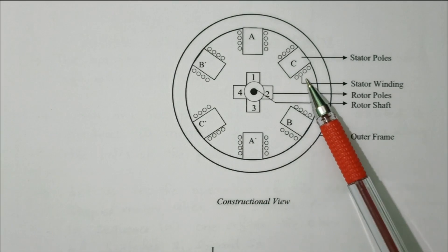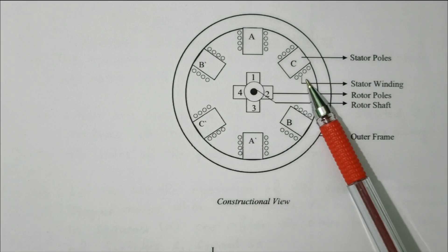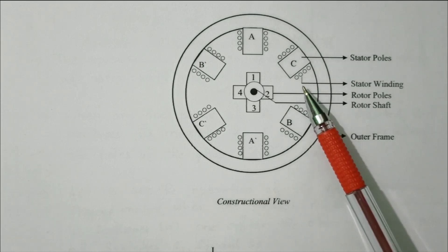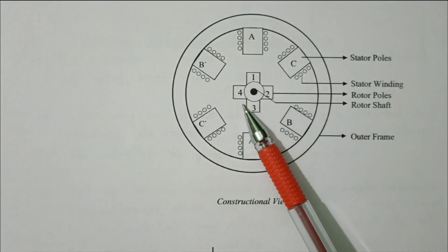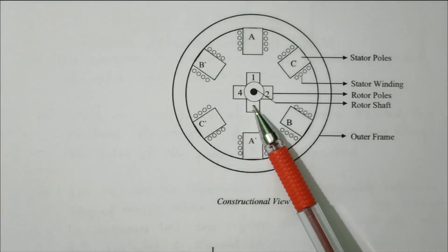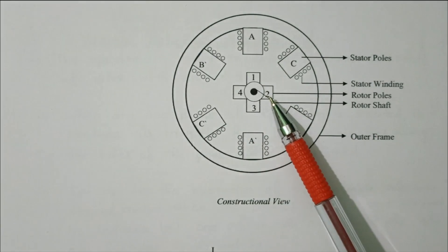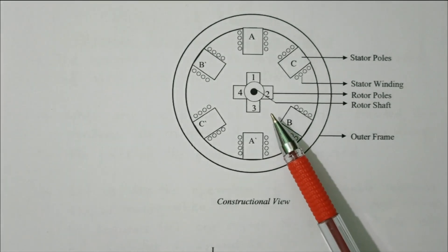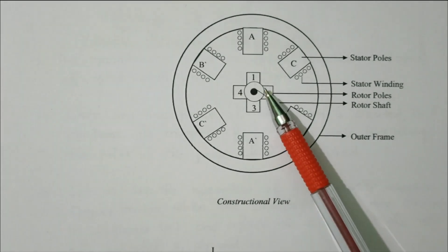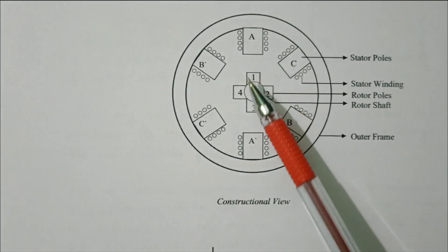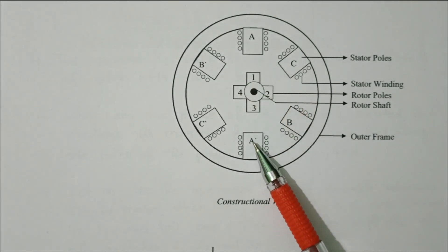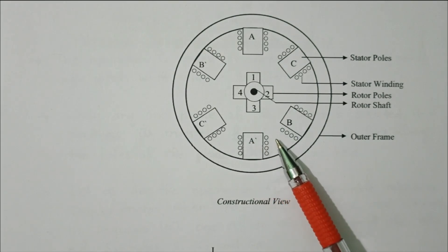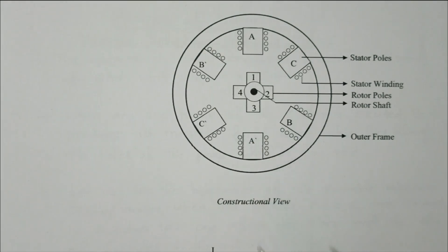When the supply is given, it becomes excited. It will align with the minimum reluctance position. Now we will see how it is excited — this coil a/a-dash, b/b-dash, and c/c-dash.